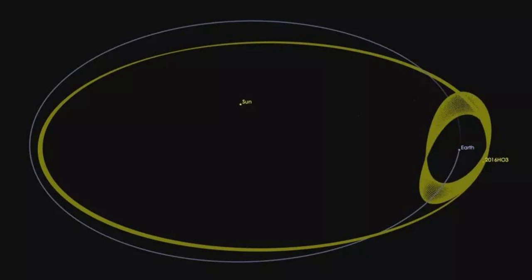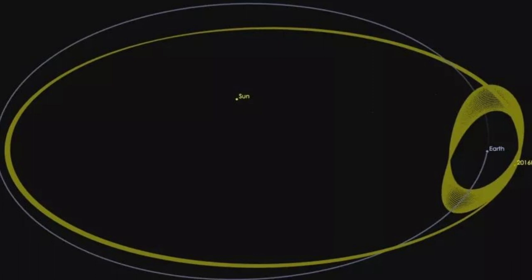The asteroid's existence was then confirmed by the Canada-France-Hawaii Telescope in Hawaii and two observatories in Arizona before being officially listed on April 1 by the Minor Planet Center at the International Astronomical Union, a network of scientists responsible for designating new planets, moons, and other objects in the solar system.